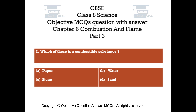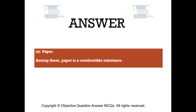Question number 2. Which of these is a combustible substance? Option A Paper, Option B Water, Option C Stone, Option D Sand. The right answer is Option A — Paper. Among these, paper is a combustible substance.